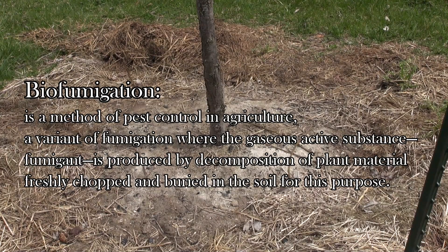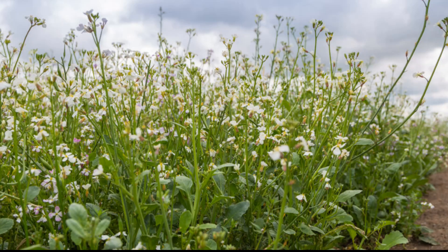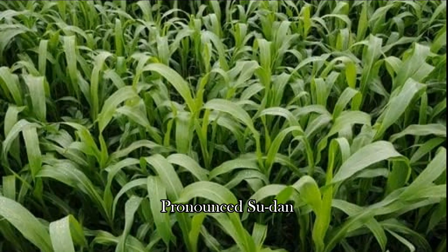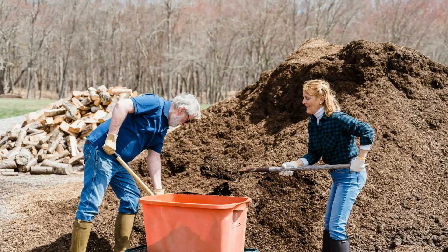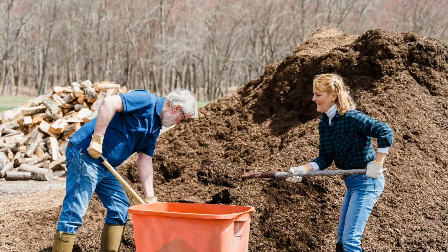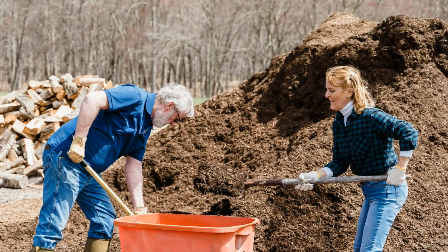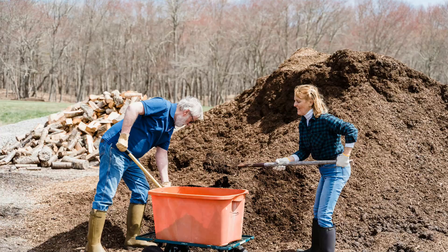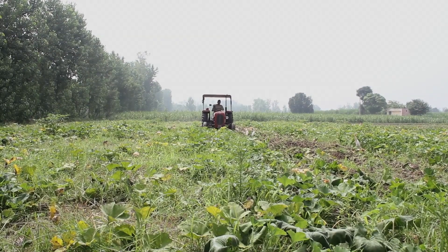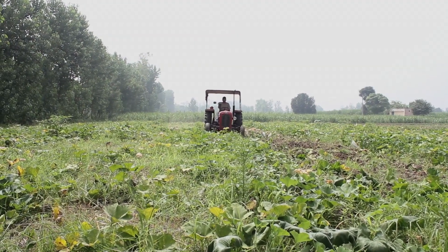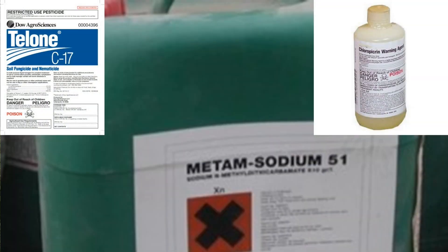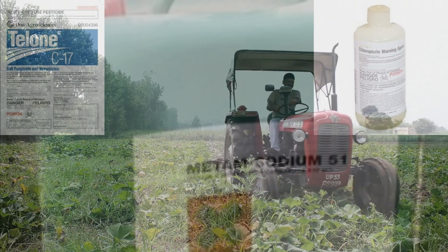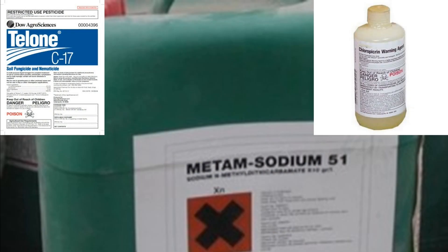Biofumigants are specific plants such as white mustard, oilseed radish, red clover, sorghum sudan grass, or organic materials like compost that release natural compounds into the soil to suppress soil-borne pests, pathogens, and weeds. These compounds are typically released when the biofumigant crops are chopped or mowed and incorporated into the soil, triggering their breakdown. They work similarly to synthetic fumigants but are environmentally friendly and improve soil health.